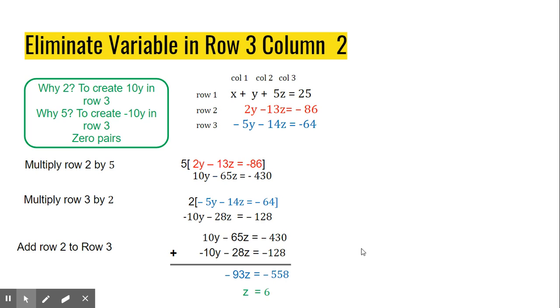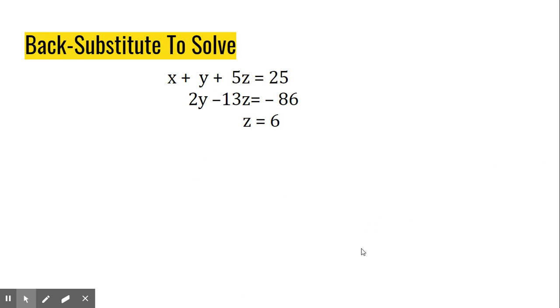Now, what's great about that is that now all I have to do is divide by negative 93 and I have my value for z. So here we are, people. And we have our triangular system. We have z is equal to a single value. And we can back substitute to solve for everything else. So let's take a look at that work.